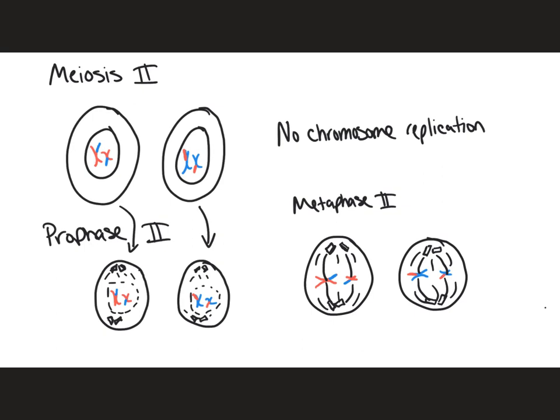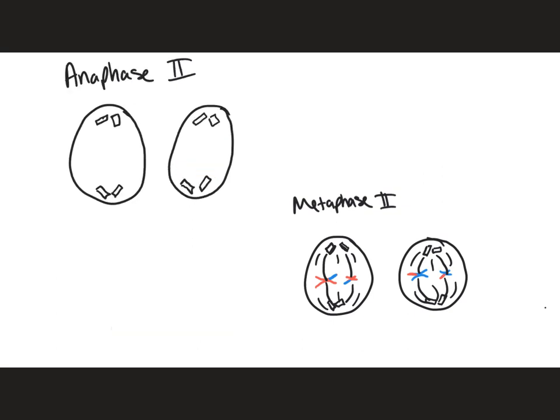So we've seen variability in prophase one through crossing over, variability in metaphase one where homologous chromosomes can line up in either orientation, and also in metaphase two where the sister chromatids can orient in either direction — as long as they are lined up at the metaphase plate so one will go to one pole and the other to the opposite pole.